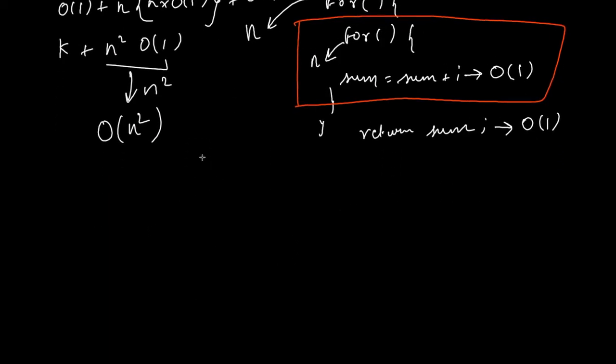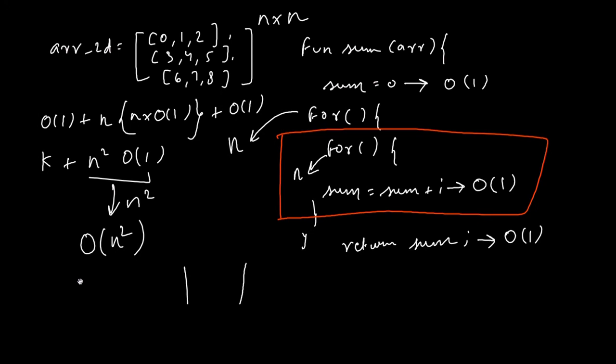For this function the time complexity is O(n²), and when we draw the graph it will look quadratic. In this video we covered Big O notation and saw the importance of time complexity, along with linear, constant, and quadratic time complexities. If you enjoyed the video, hit the like button and subscribe for more. In the next video we will cover space complexity.